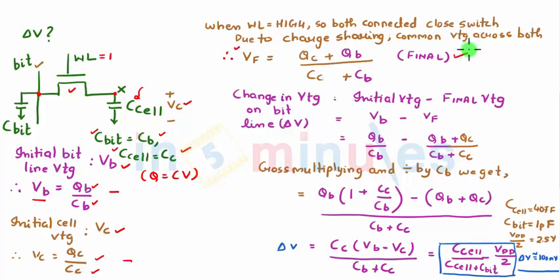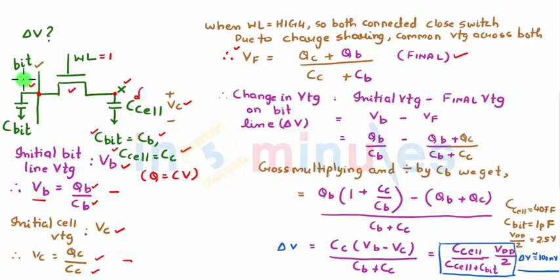When the word line goes high, charge sharing takes place and we get a common final voltage across the bit line and node X, which is: V_final = (Q_C + Q_B) / (C_C + C_B) — initial total charge divided by total capacitance. We want to find the change in voltage on the bit line, delta V, since this is what goes to the sense amplifier.